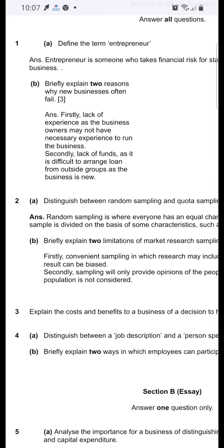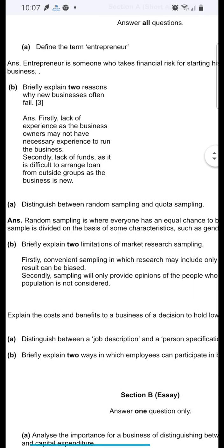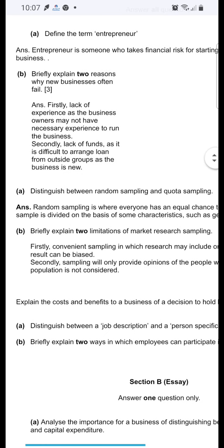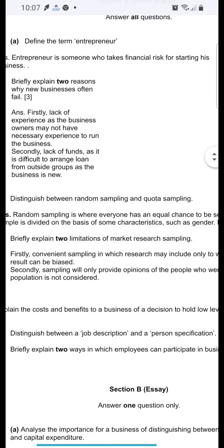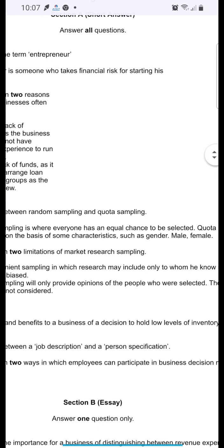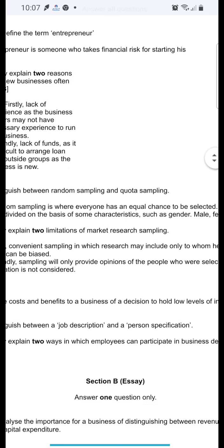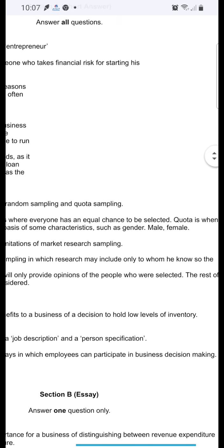Question number 2: distinguish between random sampling and quota sampling. Random sampling is where everyone has an equal chance to be selected. Quota sample is divided on the basis of some characteristics such as gender. For example, 50% of male students and 50% of female students if you are doing research.